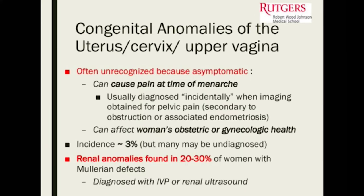Some congenital anomalies to think about in our adolescent patients: the incidence is about 3%, but many may be undiagnosed. When you have a congenital anomaly of the reproductive system, about 20 to 30% of the time there are also associated renal anomalies. When evaluating patients with Müllerian defects, it's important to also evaluate for renal anomalies.